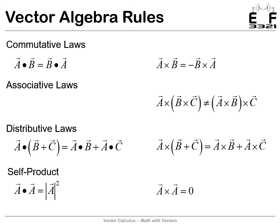We also have the self product. If a vector is dot producted with itself, that's the magnitude of the vector squared. And if we take the cross product of a vector with itself, that is zero — which makes sense because a vector is certainly parallel to itself.